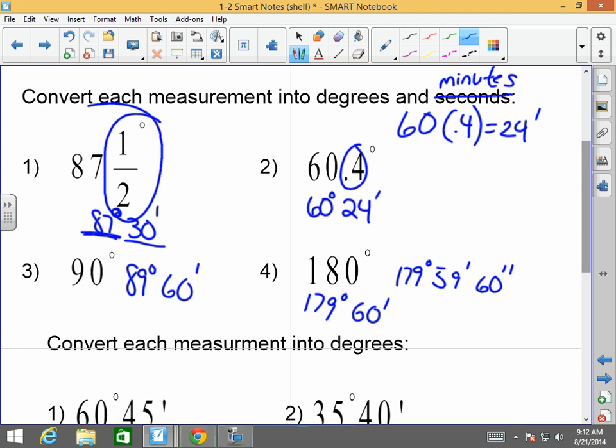So, whenever they give you a fraction or a decimal of a degree, multiply it by 60, and that will give you the minutes. No. No. Because 60 seconds is one minute, right? What's 59 minutes plus one minute? 60 minutes. 60 minutes is one degree, making that 180. Thank you so much for paying attention.